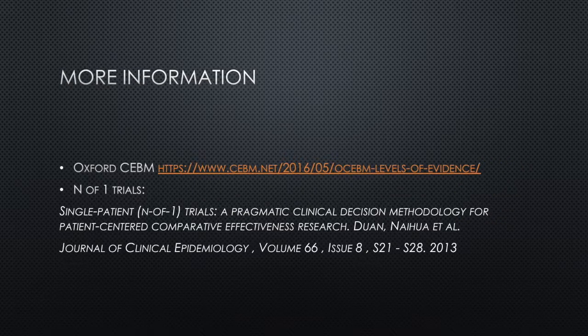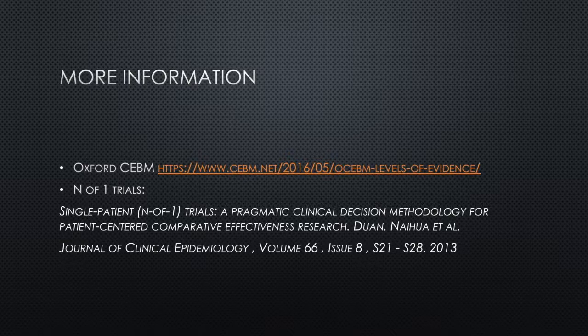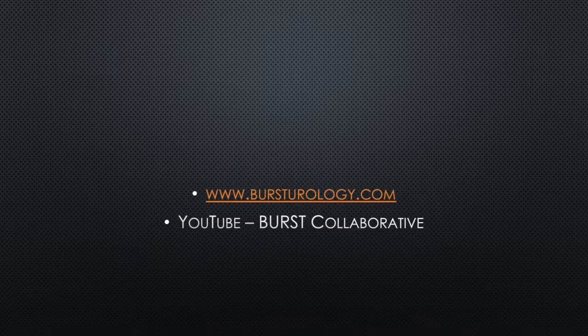I hope that gives you a brief understanding about levels of evidence. Remember that if you're asked the question, most people will be familiar with the 2009 levels, and that is something you should certainly be familiar with. But the new 2011 table is, in my opinion, much more in keeping with modern day research practice and much more intuitive once you get used to it, so it's definitely something to be aware of. Here's a reference to a paper explaining single patient N of 1 trials, and as always keep up to date with the latest news from Burst on the website. Any questions, feel free to fire them across — thanks for watching.